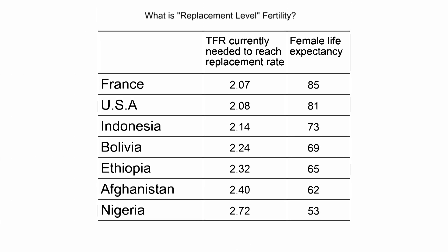In this table we can see the United Nations estimates of what total fertility rate would be required today for a country to reach replacement. In France, that would be about 2.07 children per woman. Whereas at the bottom of the table, in Nigeria, it would be 2.7 — mainly because of the higher death rate in Nigeria, so a smaller proportion of women survive to the end of their childbearing years. We can see that in the female life expectancy: 85 in France and only 53 in Nigeria.